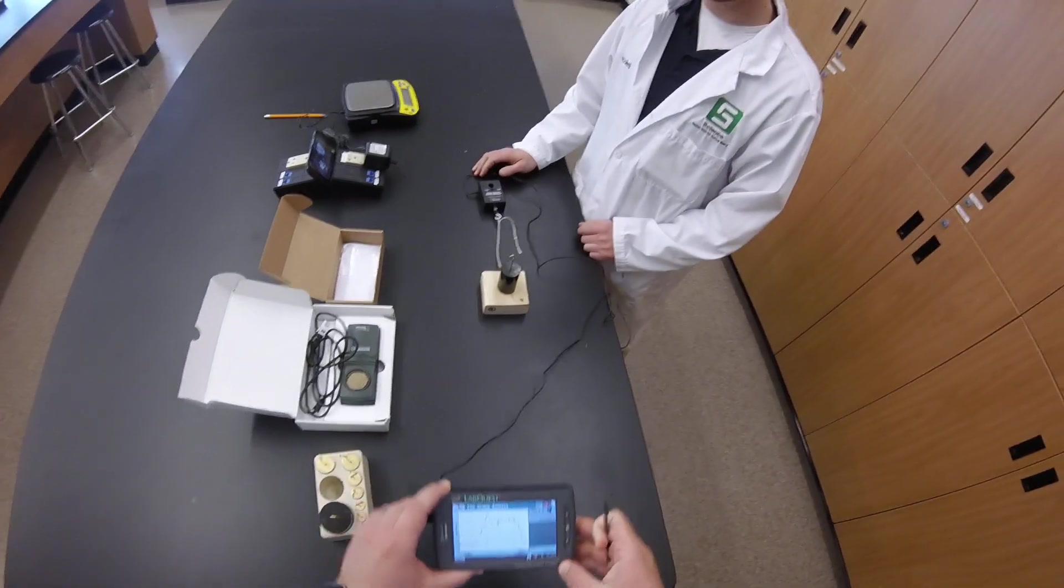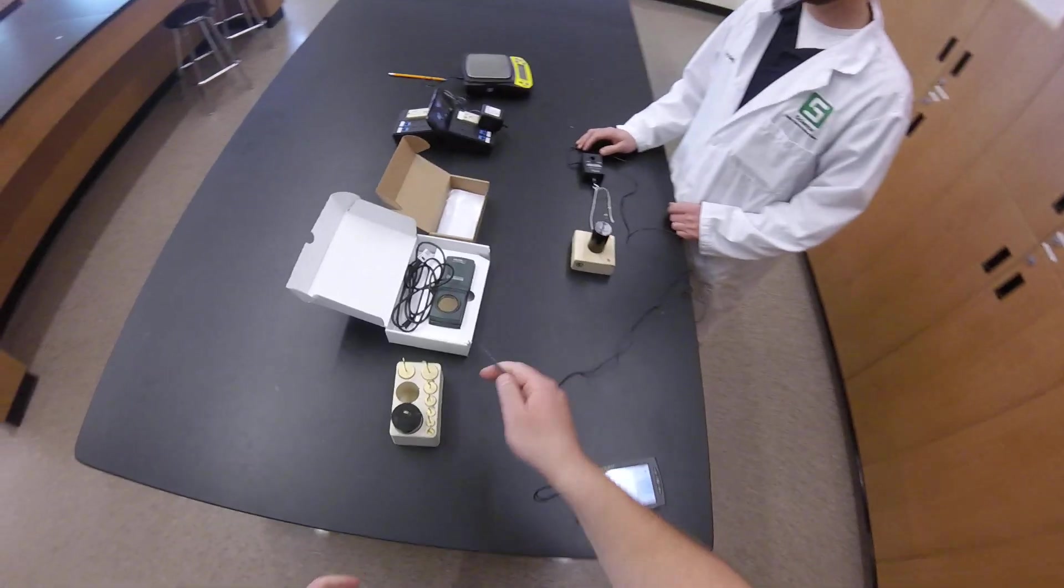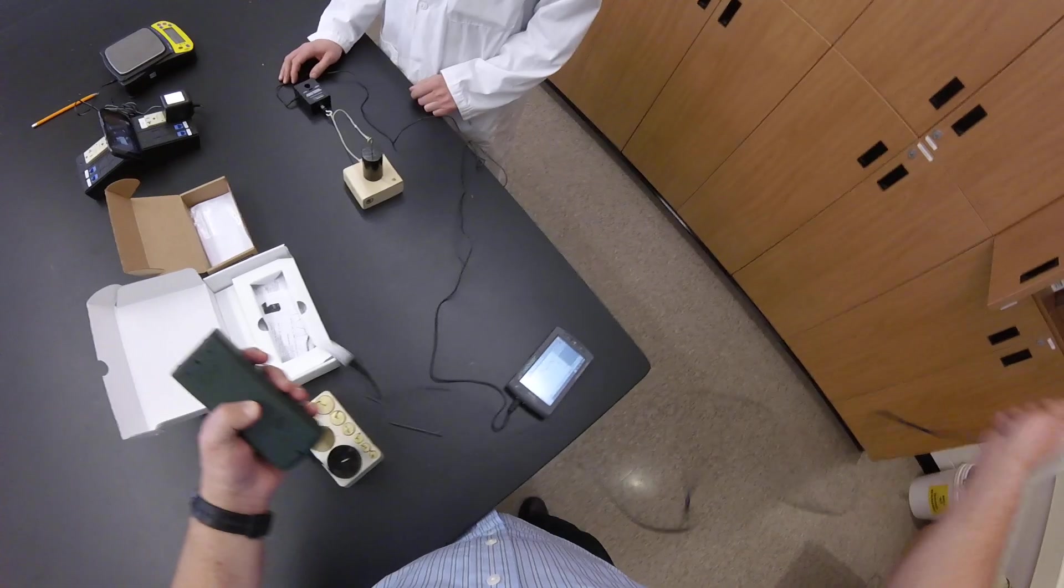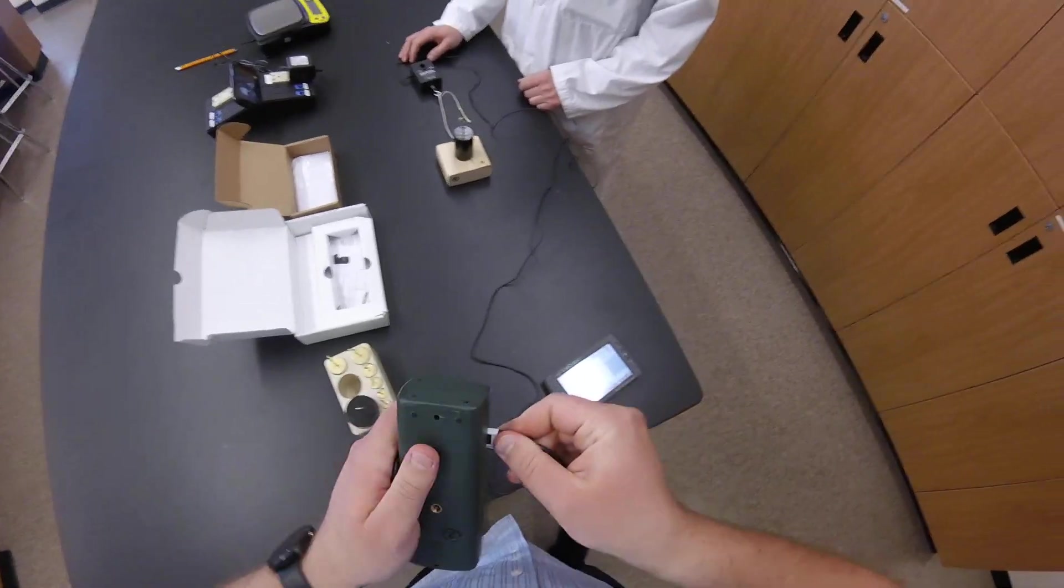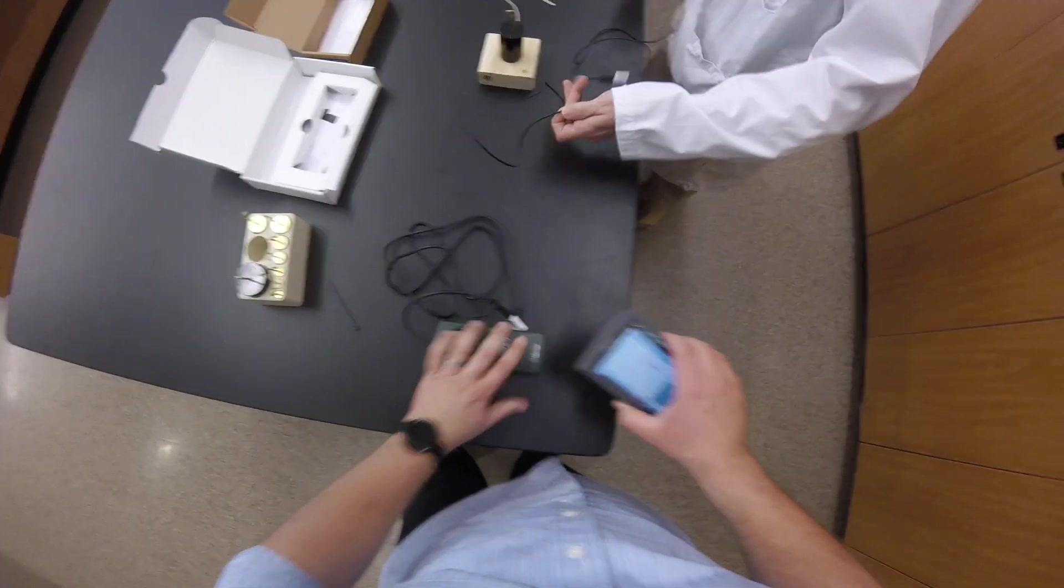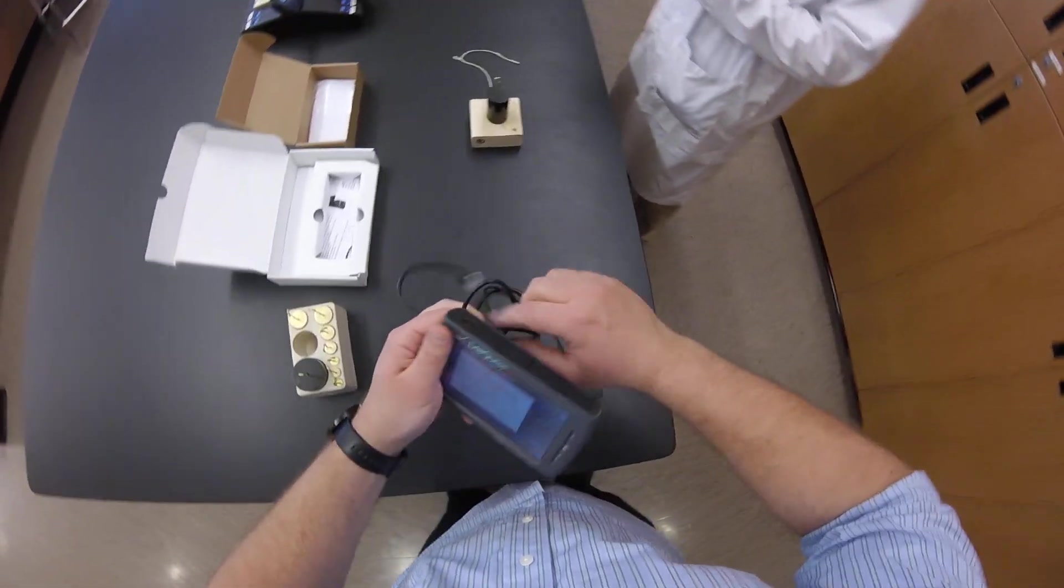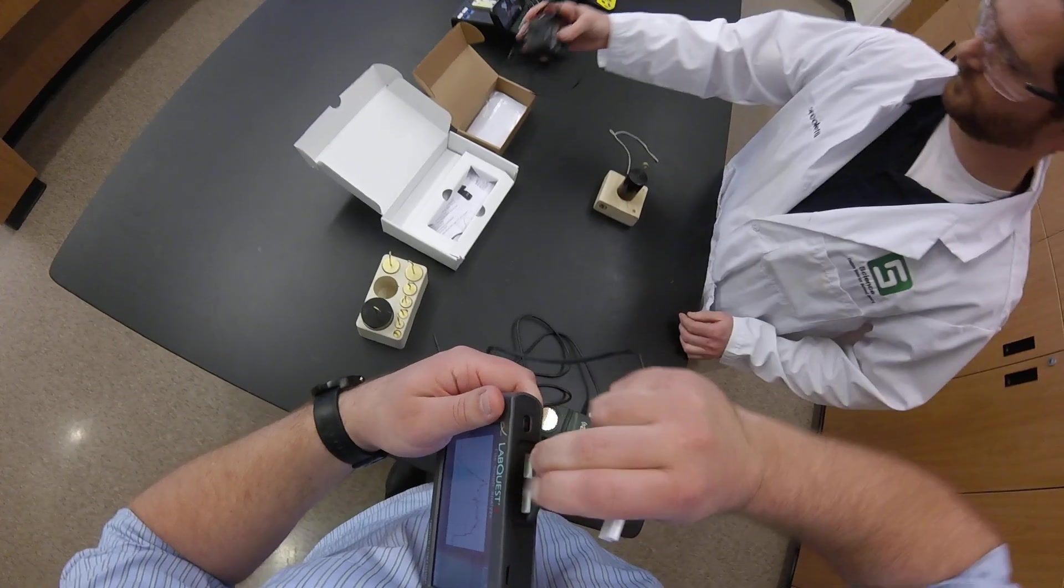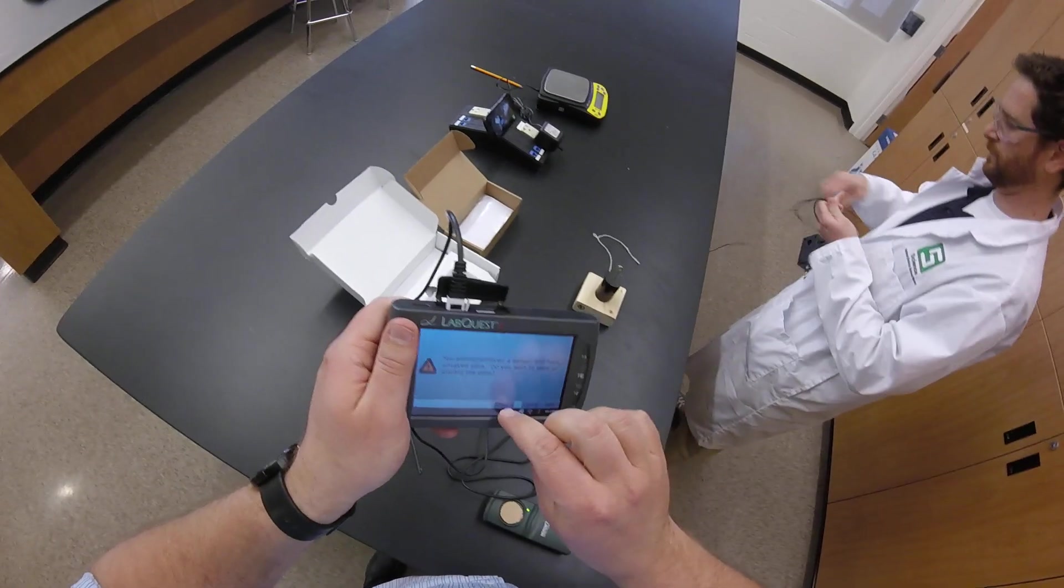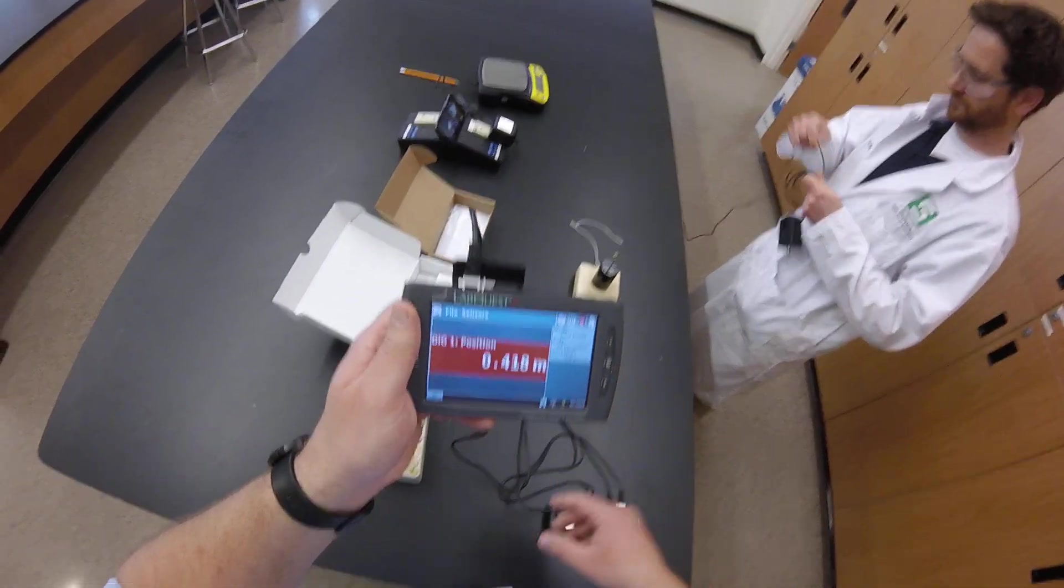All right. So we're going to set up for the second part of the lab. The second part of the lab, we determine friction in a different way using the motion detector. So we're going to plug in our motion detector to the top. We're going to unplug our force probe. And in this one, we're only finding the kinetic friction, not the static.